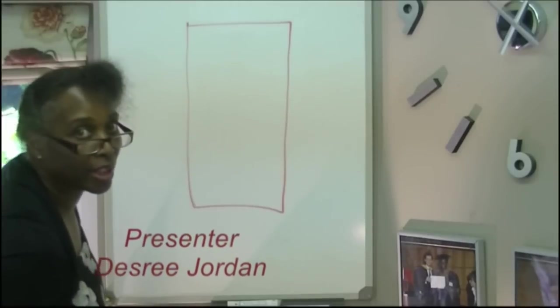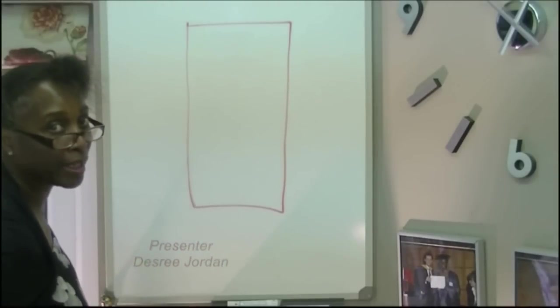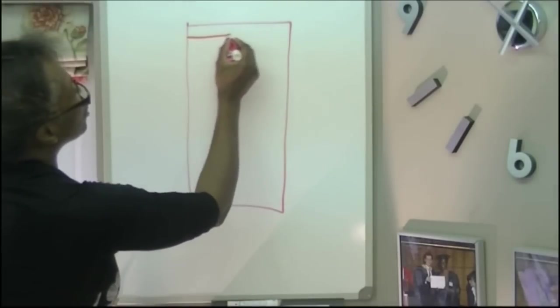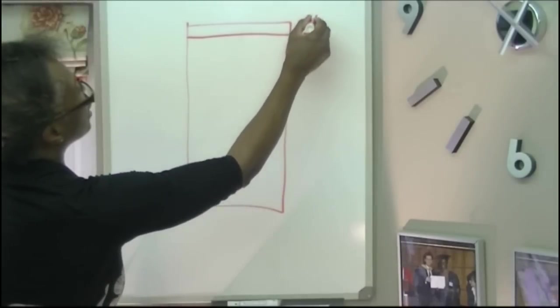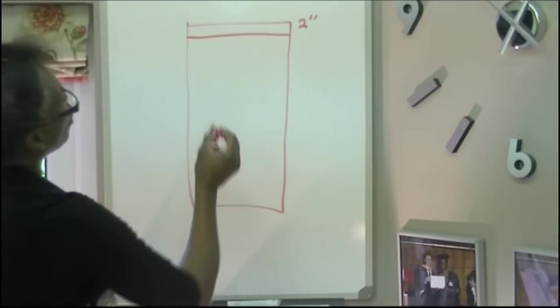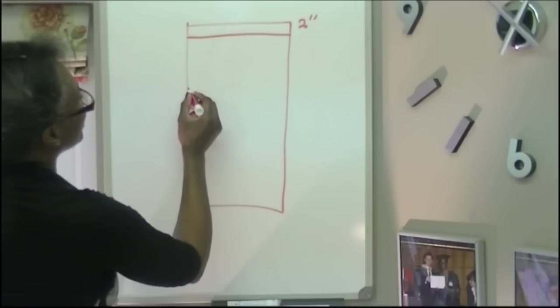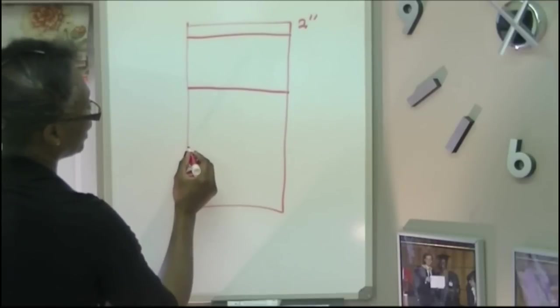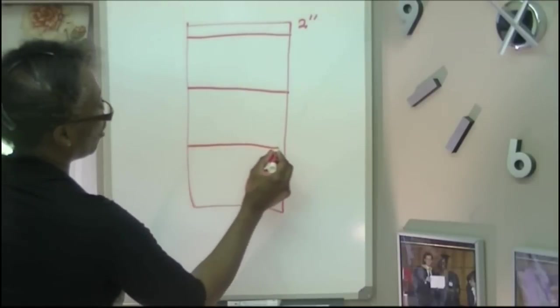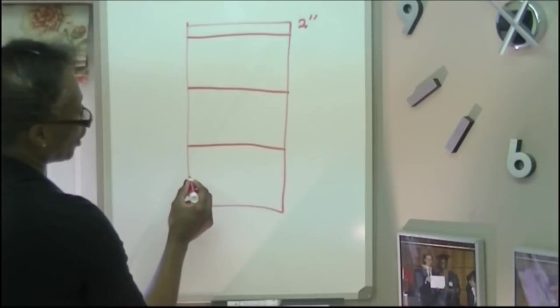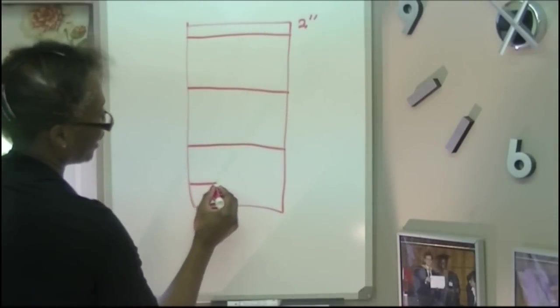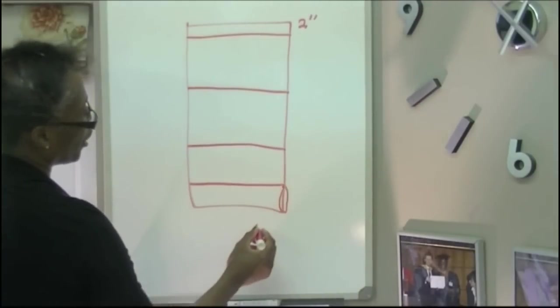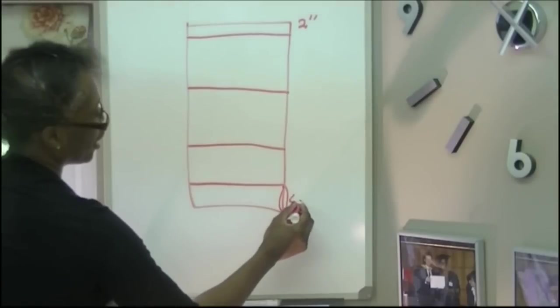And this Roman blind is going to have three pleats. So first of all we're going to allow two inches for the top and that's going to be tucked in. We're going to allow 14 inches for the first pleat and 14 inches for the second pleat and what's going to look like the third pleat is going to be seven inches. Our turn up, we're going to allow four inches for our turn up.